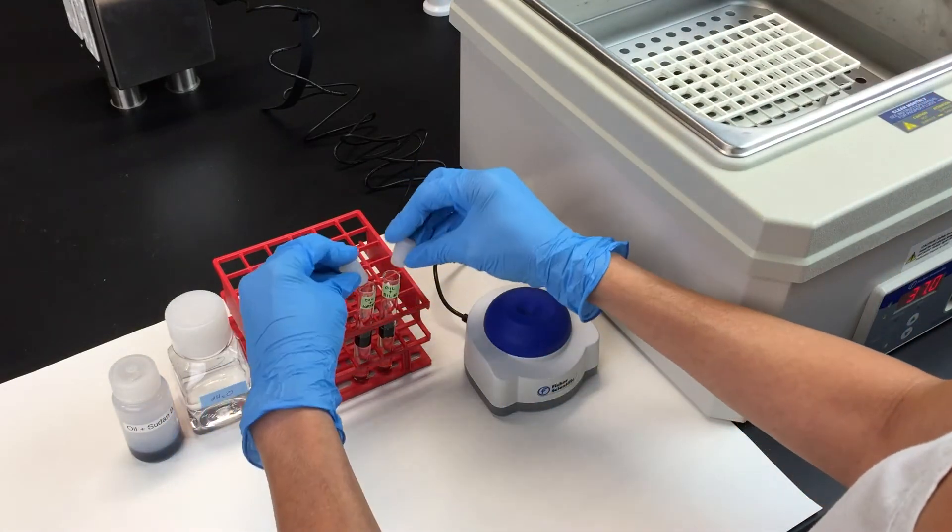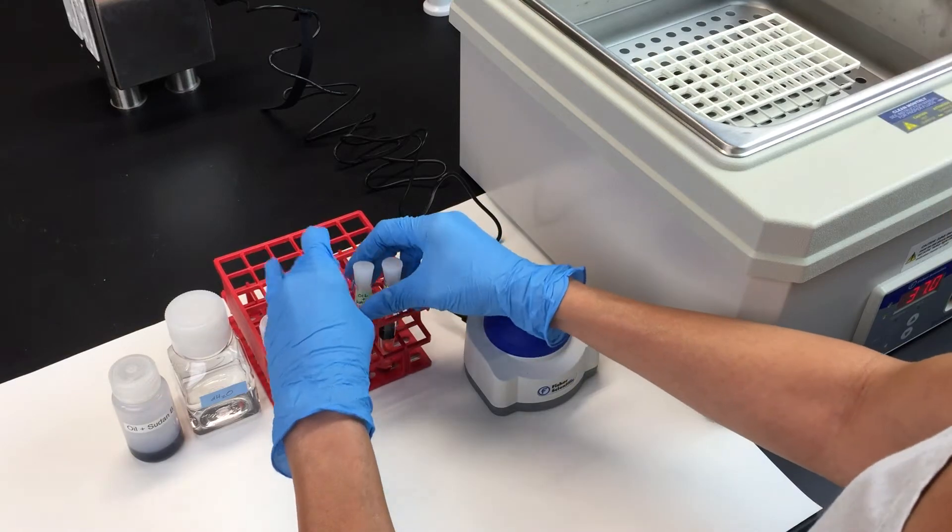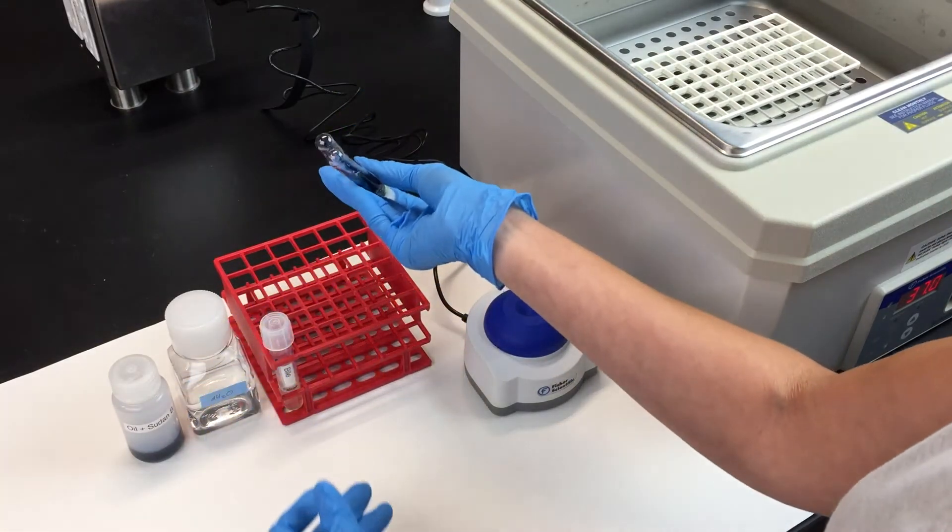Put a stopper in each tube and carefully invert each one. Note how the oil drops form and rejoin into an oil layer on top of the water or bile.